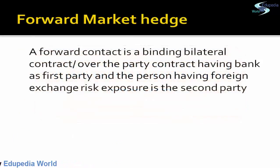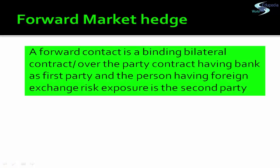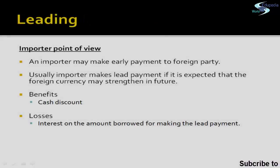Since we have already discussed forward market hedge in derivatives, it is simply entering into a contract with another party — typically a bank — in which there is an agreement that a specified amount is to be delivered at a fixed rate after a specified period of time. In this way, the risk that the rate may fluctuate beyond the limit is hedged. A forward contract is a binding bilateral contract, meaning both parties must fulfill their commitments; no party can back out.